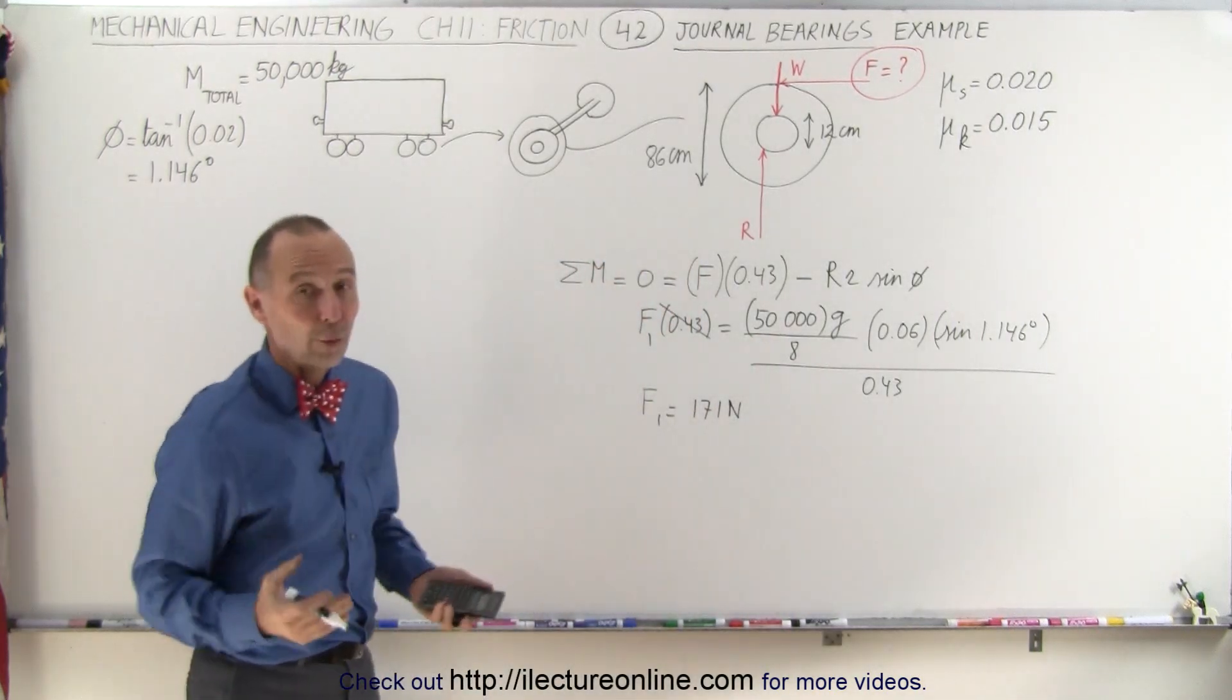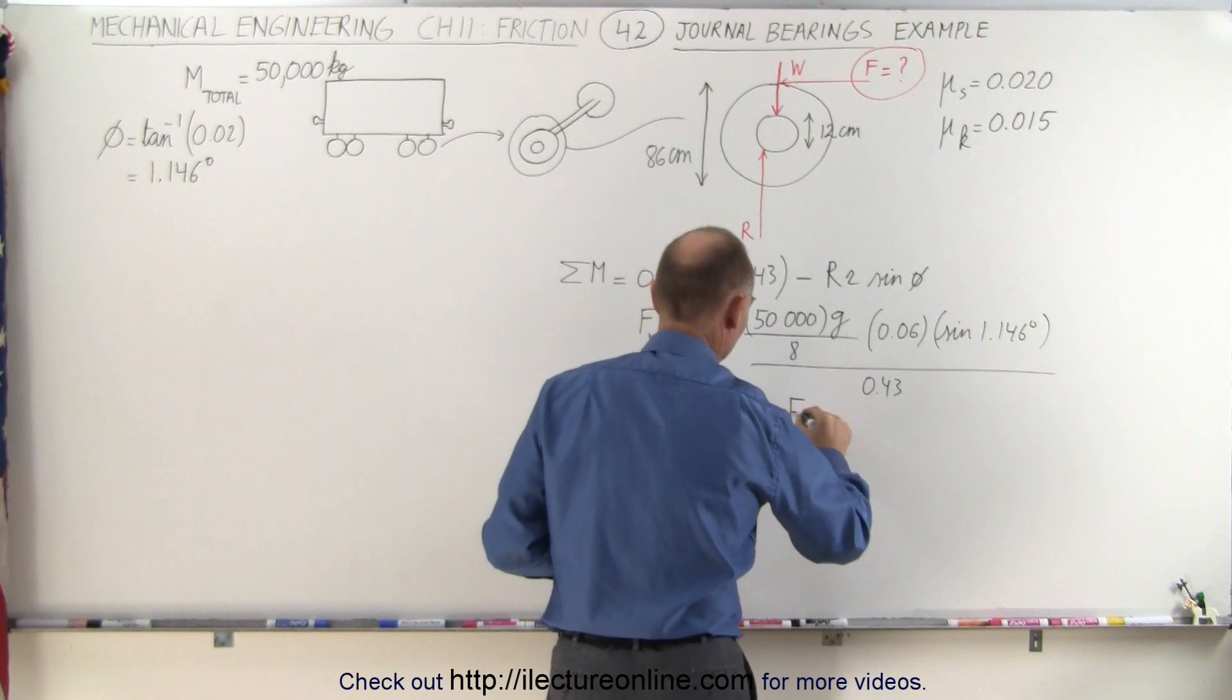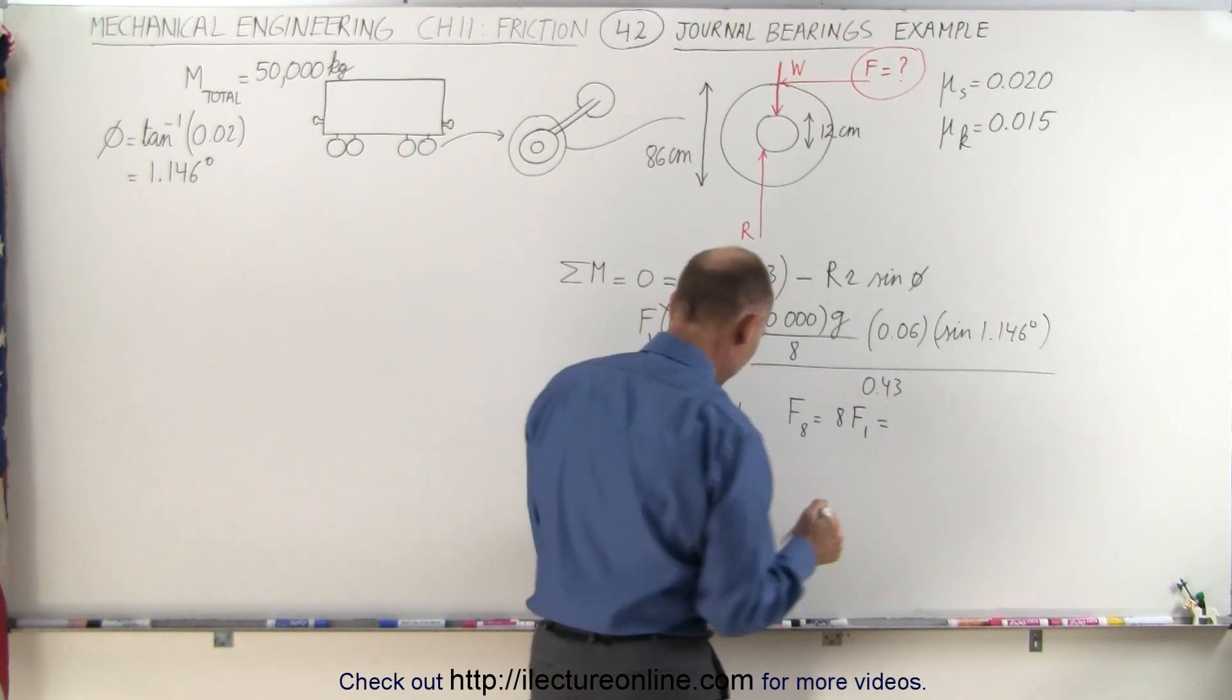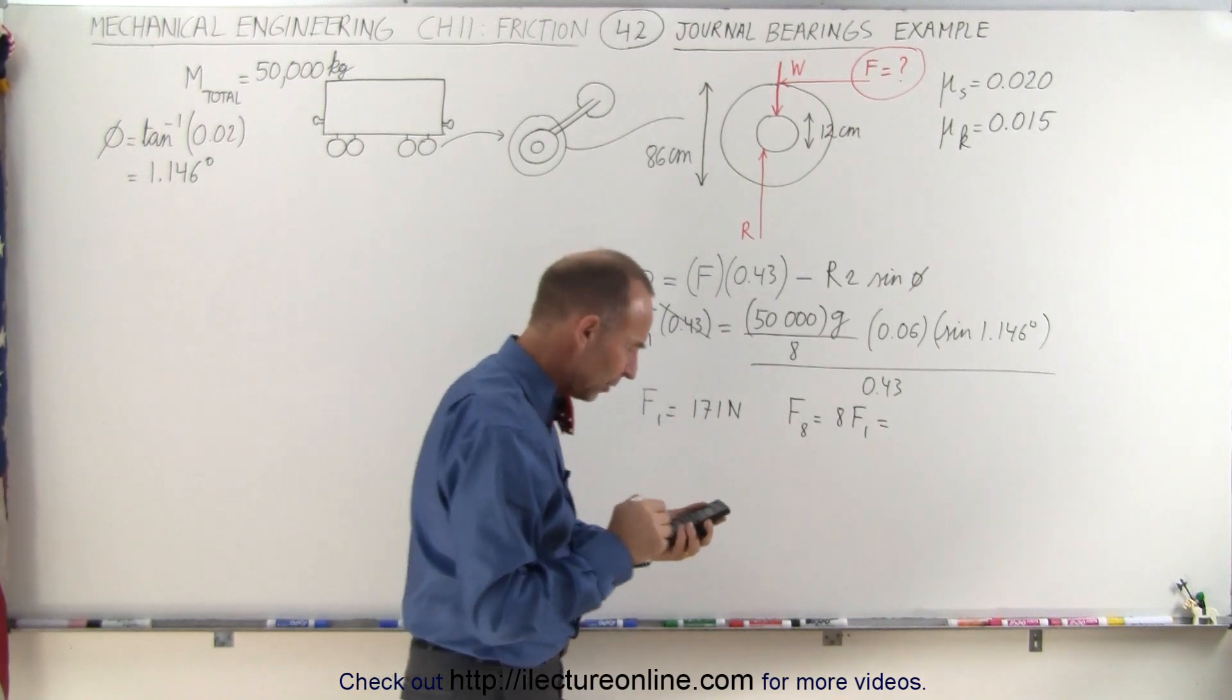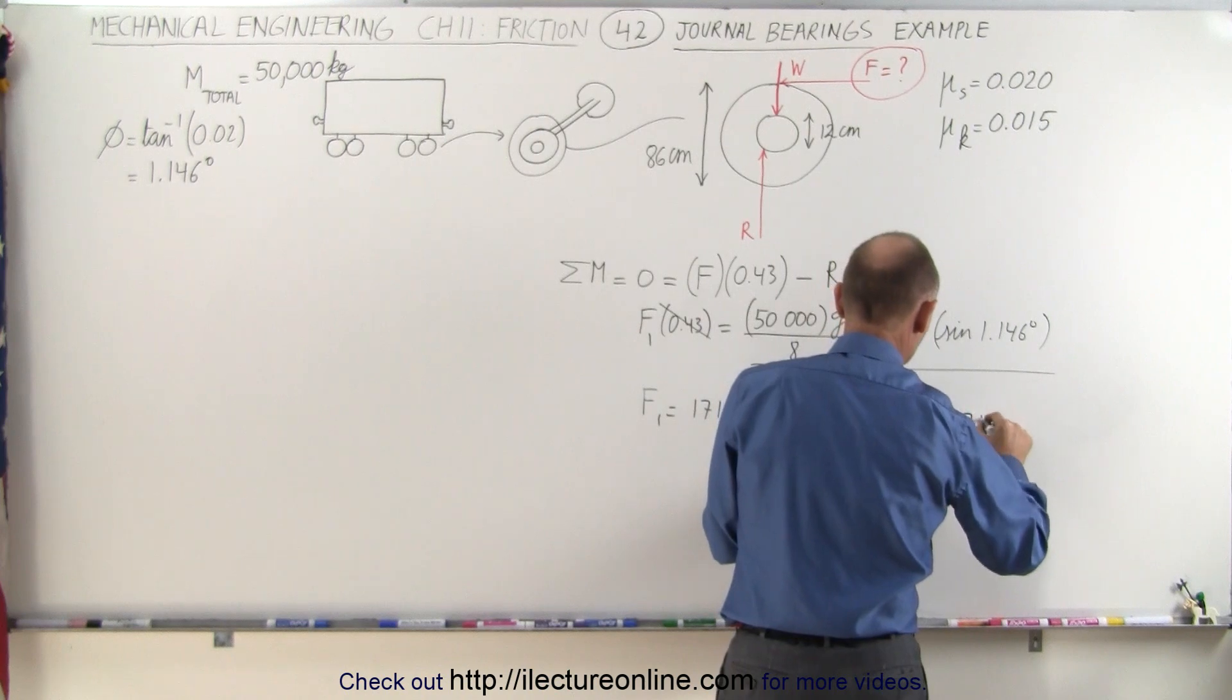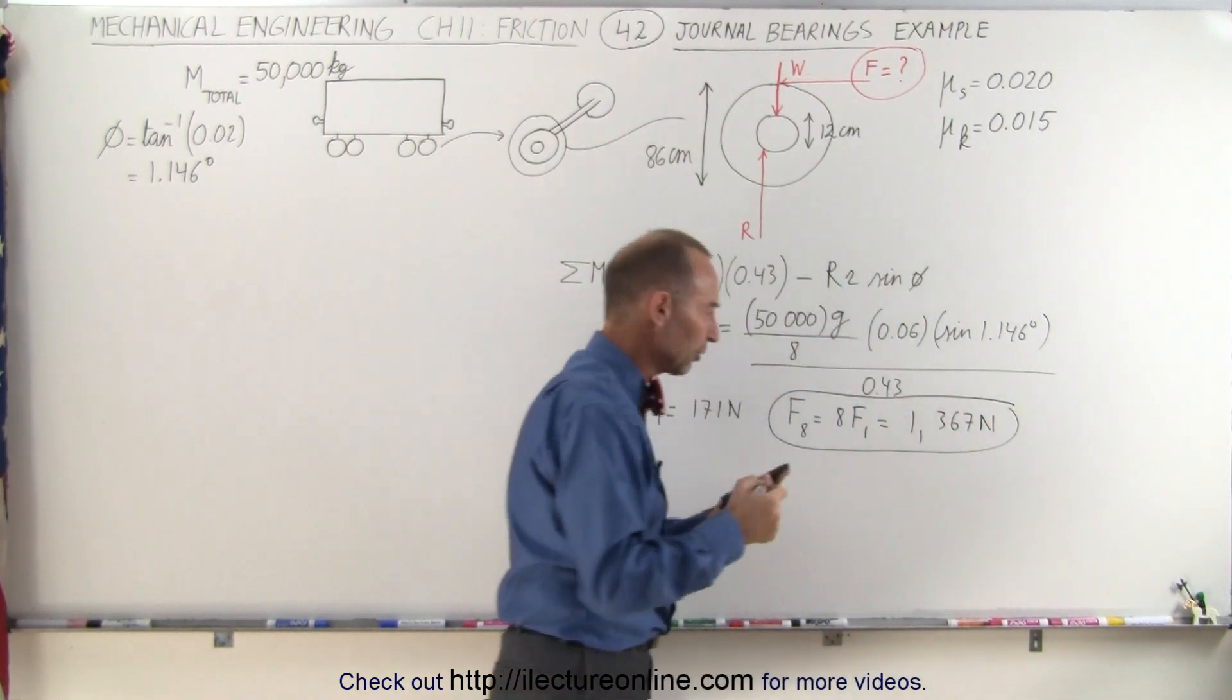That's to get each wheel going, so to speak. But to get the entire car going, let's call it F8, that would be 8 times F1, because there's eight wheels, so times 8 equals, that would be 1,367 newtons of force required to get the railroad car moving.